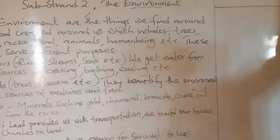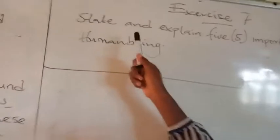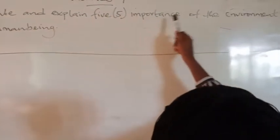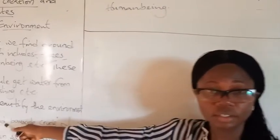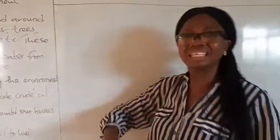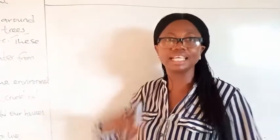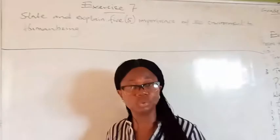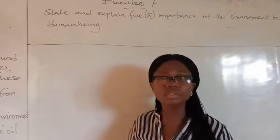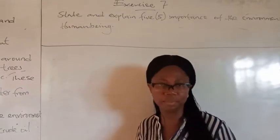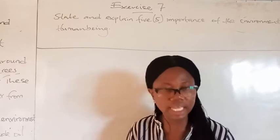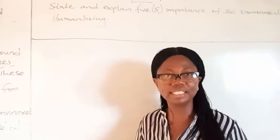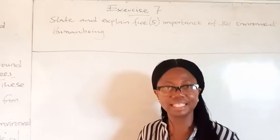So that will bring us to the exercise. State and explain five importance of the environment to human beings. It brings you back to what I just talked about — you can pick from there. Sit down, look around you, then mention five of them and tell me their purposes, what you can use them for. It would be nice if you can take your own examples — that will show how intelligent you are and how you understand the topic. You send it to my WhatsApp line. We will meet in the next class. Thank you, bye-bye.